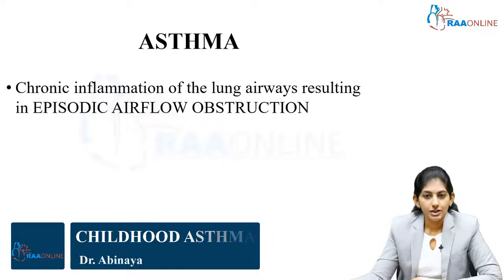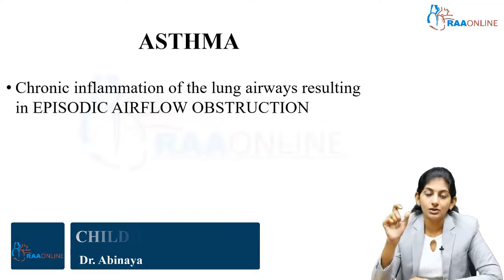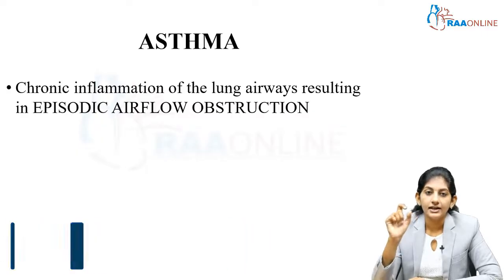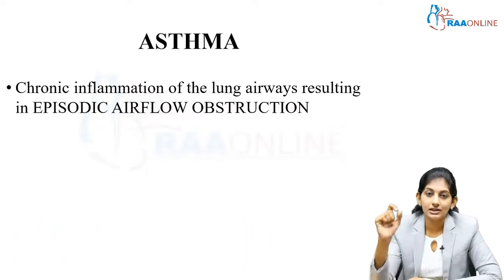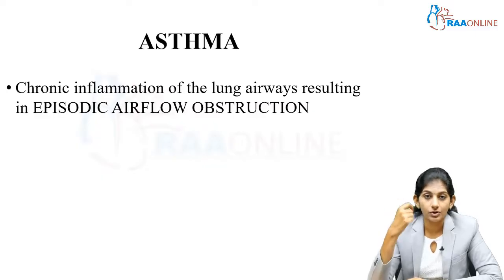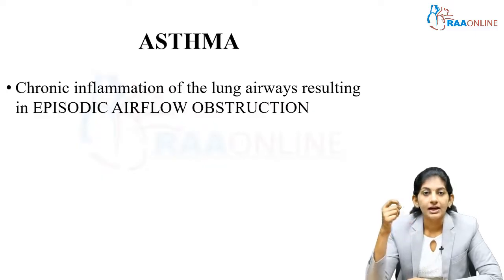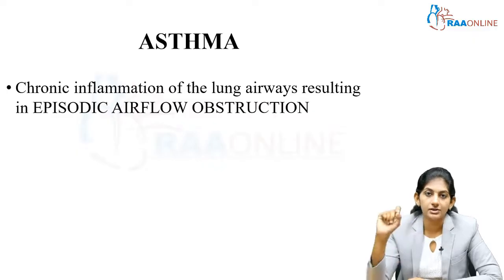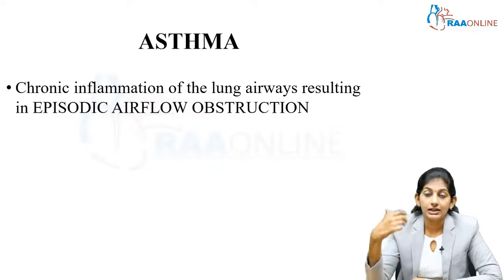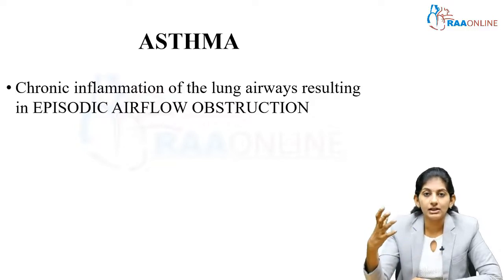Asthma is a chronic inflammation of the lung airways. The word 'chronic' is very important. Even though the patient's symptoms are under control, there is some inflammation going on inside the inherent airways. It is a chronic inflammatory disorder, and this results in an airflow limitation that can be persistent or episodic — predominantly it is an episodic airflow limitation.